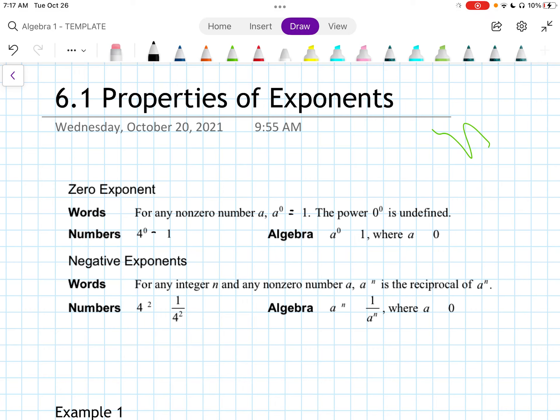With numbers, that would be 4 to the 0 is 1. Algebra would be A to the 0 is 1, where A does not equal 0. The good thing to know here is 4 to the 0 is 1, or A to the 0 is 1. Anything that's not 0 to the power of 0 is 1.